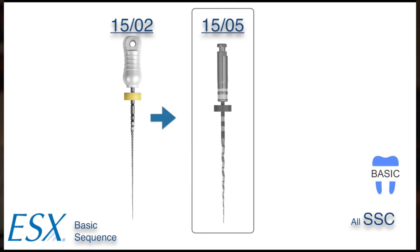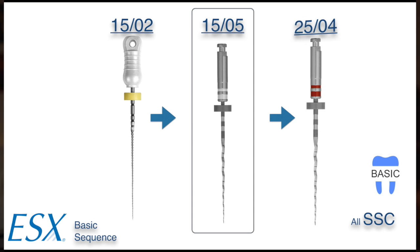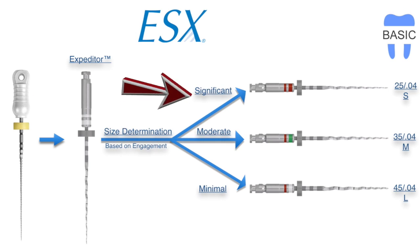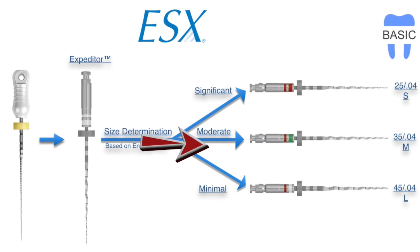So if you reach the apex easily with a size 15 hand file, you can triage the case into the basic protocol. In this protocol, you first work the expediter to the full working length. When the expediter is at the apex, you choose which finishing file to use based on how difficult it was to get the expediter to that length. Significant engagement → size 25 master file; moderate engagement → size 35; minimal engagement → size 45. It's fairly straightforward.